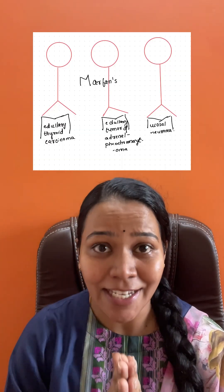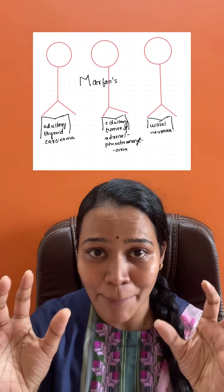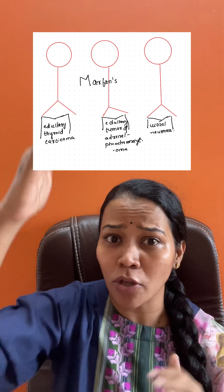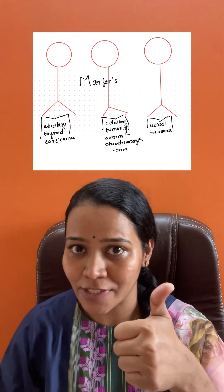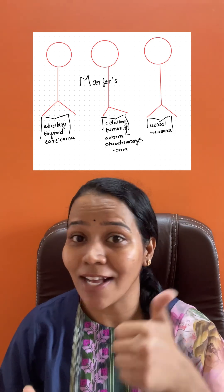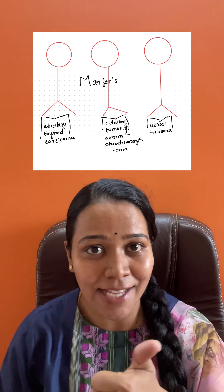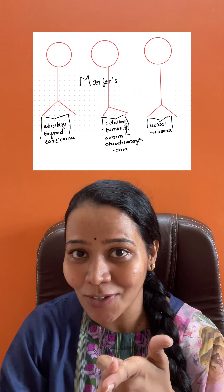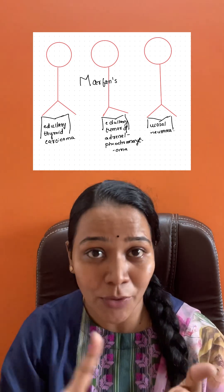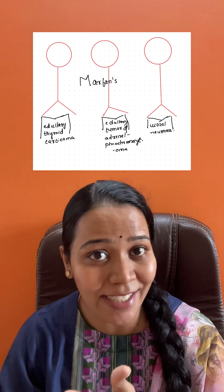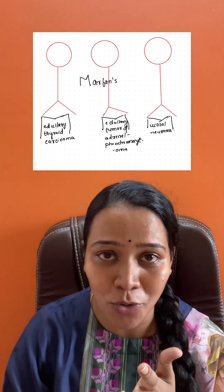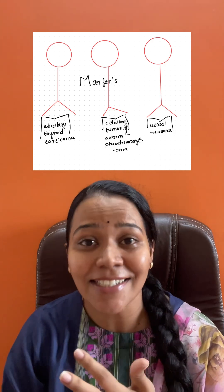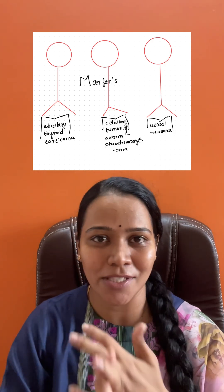For MEN 3, draw three men standing on '3M.' These men are quite tall, so they have Marfan's syndrome. The other three M's they're standing on are: medullary thyroid carcinoma, medullary tumor of the adrenal or pheochromocytoma, and mucosal neuroma.